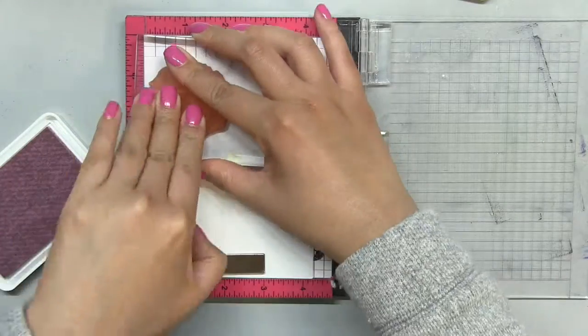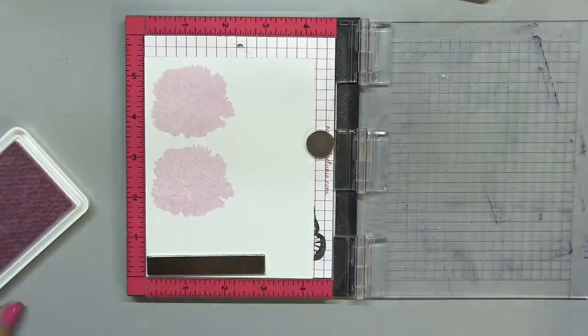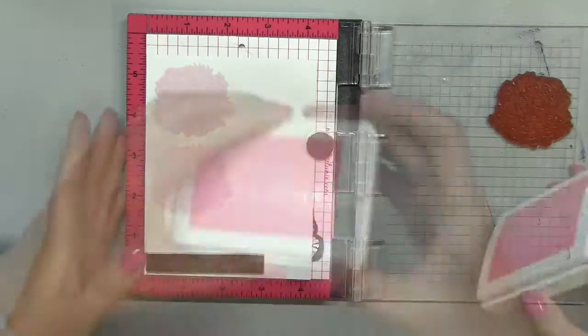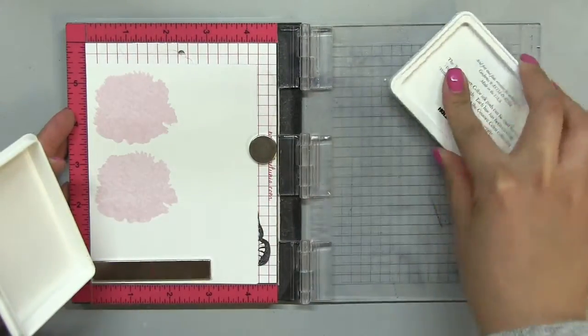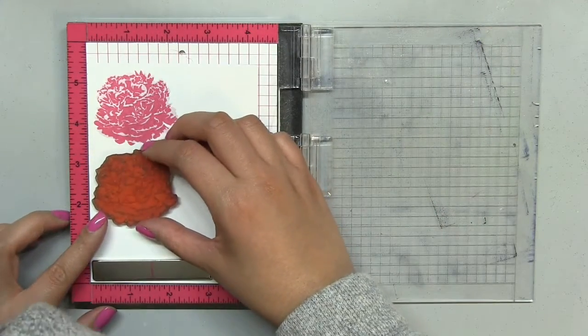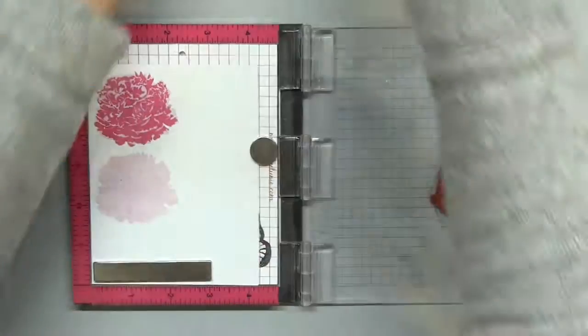So first off, I'm going to stamp the first layer of this large peony in our Ballet Slippers dye ink, and then for the rest of the layers, I'm going to use my MISTI tool to help me position the rest of the layers. So for the top peony, I'm going to stamp the three layers in our traditional peony collection couture inks.